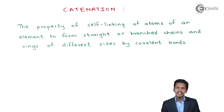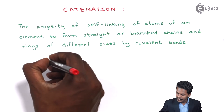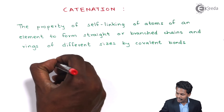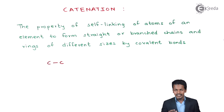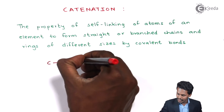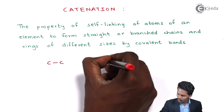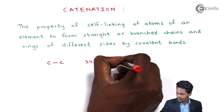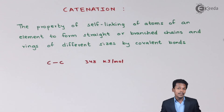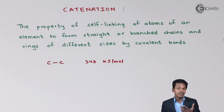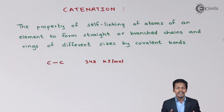Let me give you details about a few bond enthalpies. The bond enthalpy of carbon-carbon — meaning the energy required to break the bond between two carbon atoms — has been found to be 348 kJ/mol. This much energy is required to break one mole of carbon-carbon bonds.